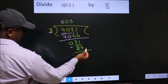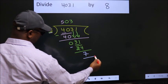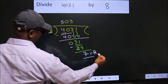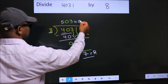No more numbers to bring down. So, we stop here. This is our remainder. This is our quotient.